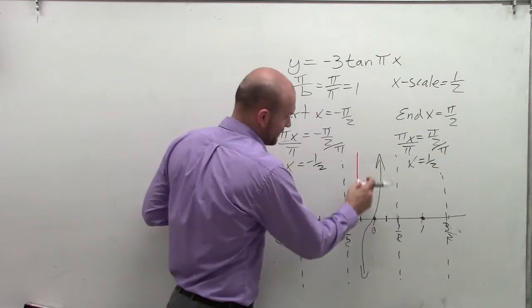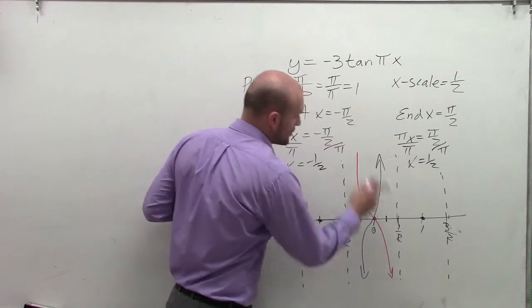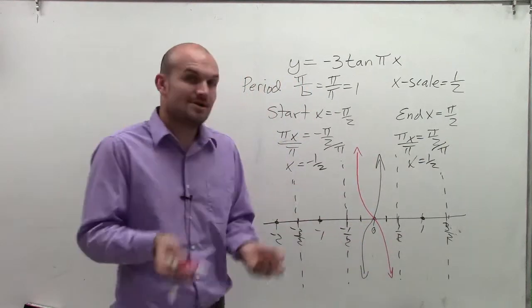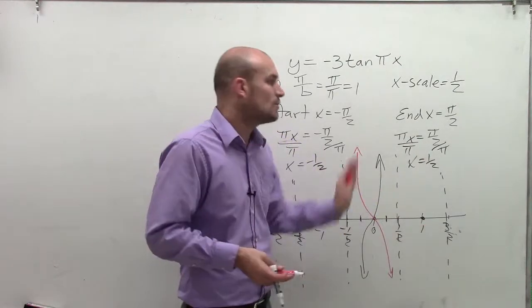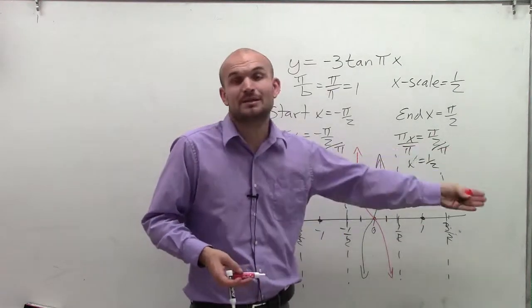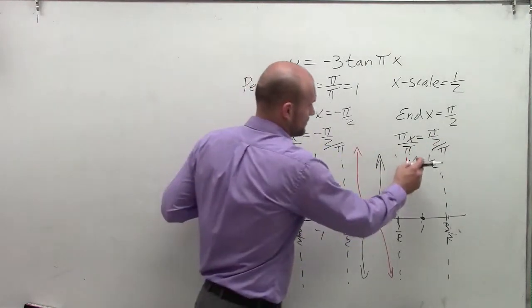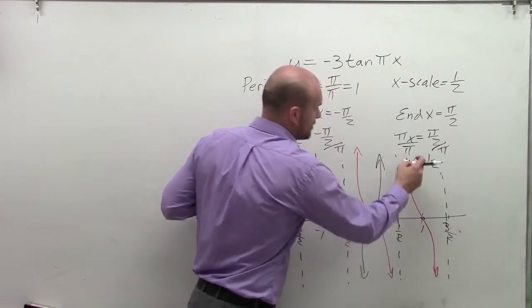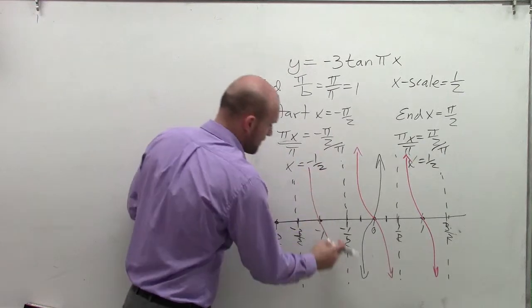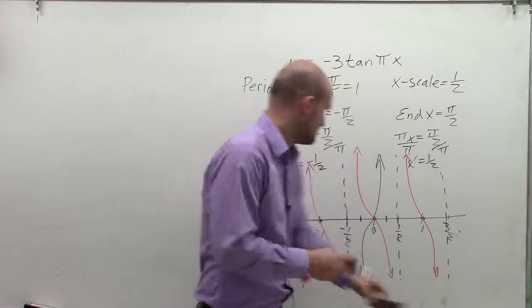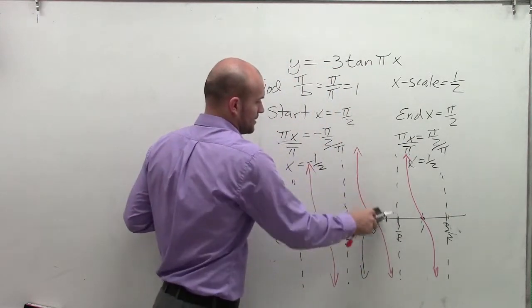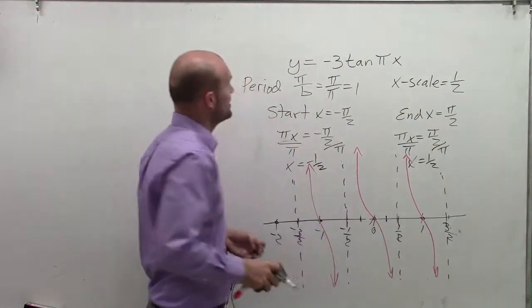I'm now going to take this graph and reflect it over the x-axis. It's also important for us to remember that these graphs are cyclical. We're going to keep repeating them infinitely in the positive and negative direction. I'm just going to keep sketching these, making them nice and skinny. I can now eliminate my original parent graph.